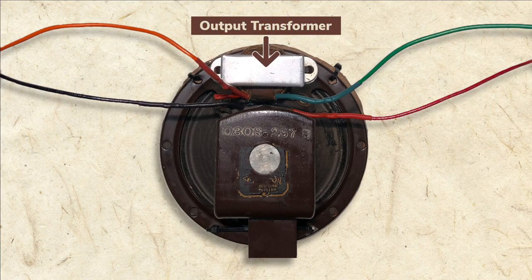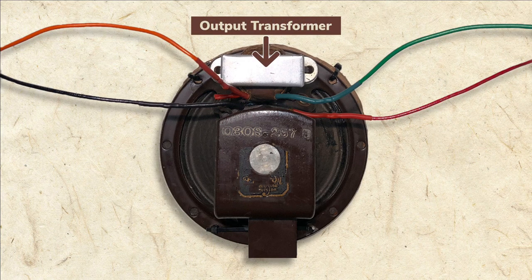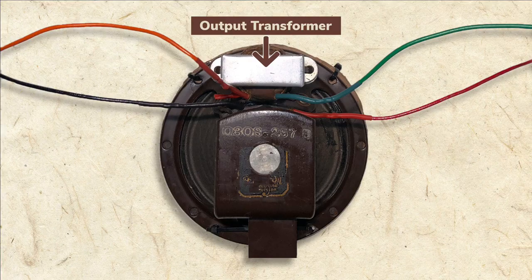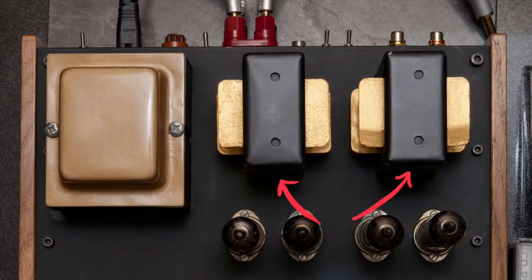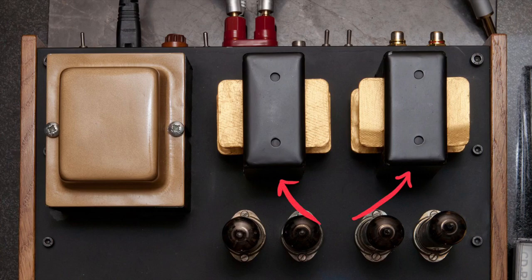The output transformer is mounted directly to the speaker assembly, which is a common arrangement in antique radios. Today output transformers are still used, but they're usually mounted to the amplifier not the speaker.